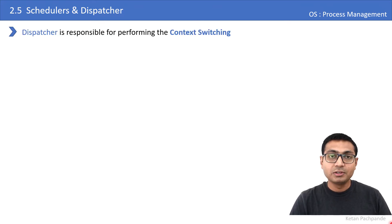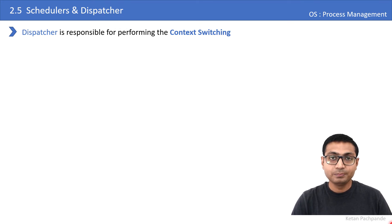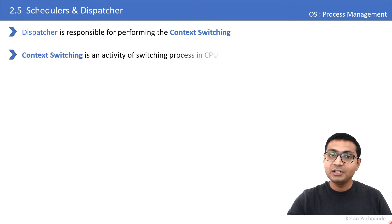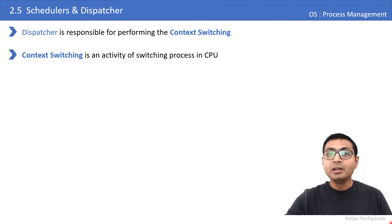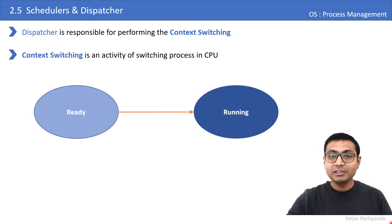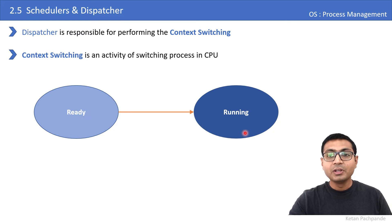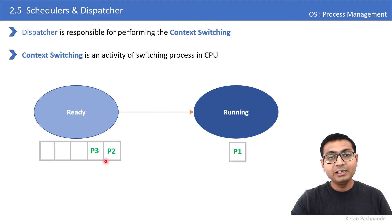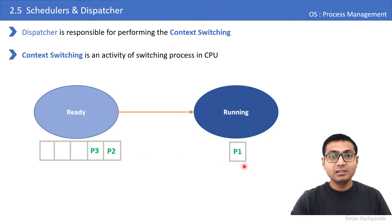The dispatcher is responsible for performing context switching. Context switching is an activity in the operating system which performs the switching of processes in the CPU. Consider the ready state and the running state: there are two processes in the ready queue waiting to get CPU time, while process P1 is currently holding the CPU and executing its instructions. Now let's perform the context switching.